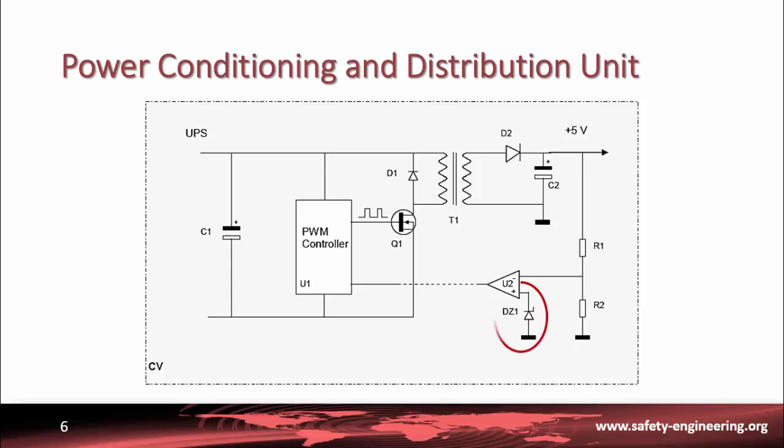Diode DZ1 is a fixed voltage reference. Resistors R1 and R2 constitute a voltage divider that is used by the operational amplifier U2 to compare an image of the output voltage to the reference DZ1. Then it informs U1 if the plus 5 volt rises or falls. So U1 fits the width of the square signal which drives Q1 to compensate fluctuations.